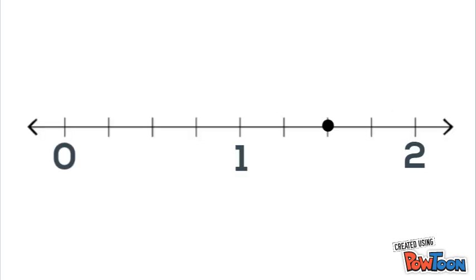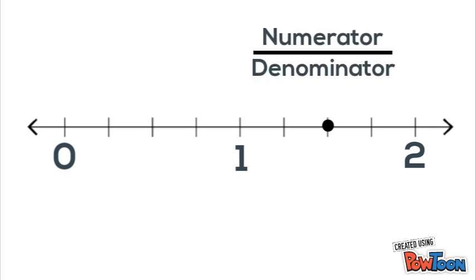Alright, let's try another one. Again, we have a number line that goes past 1. But we're not going to get tricked and we're only going to count the gaps between 0 and 1 to find our denominator. So we see there are 1, 2, 3, 4 gaps that make a whole. So our denominator is 4.